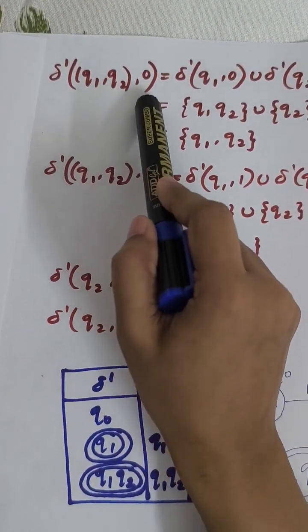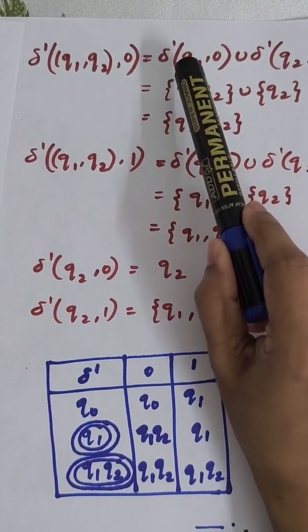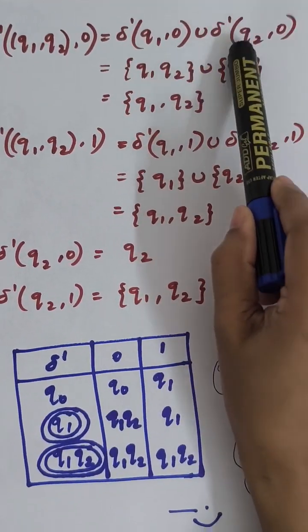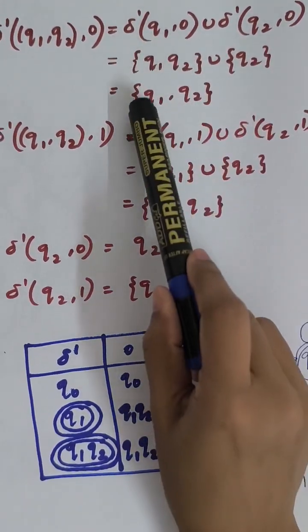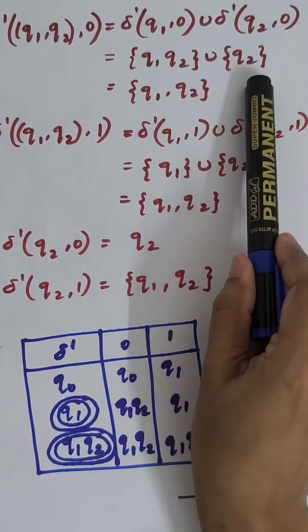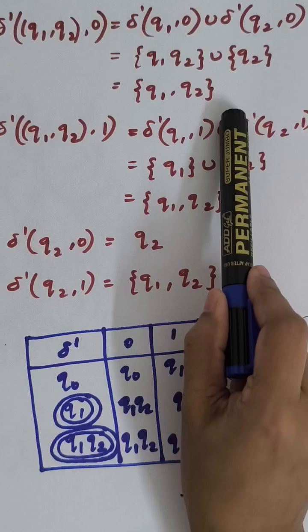Elaborating Q1, Q2 new state on 0. That is transition on Q1 to 0 and transition on Q2 to 0. We get Q1, Q2 union Q2. When it is the union, we do not repeat the states. We get the answer as Q1 and Q2.